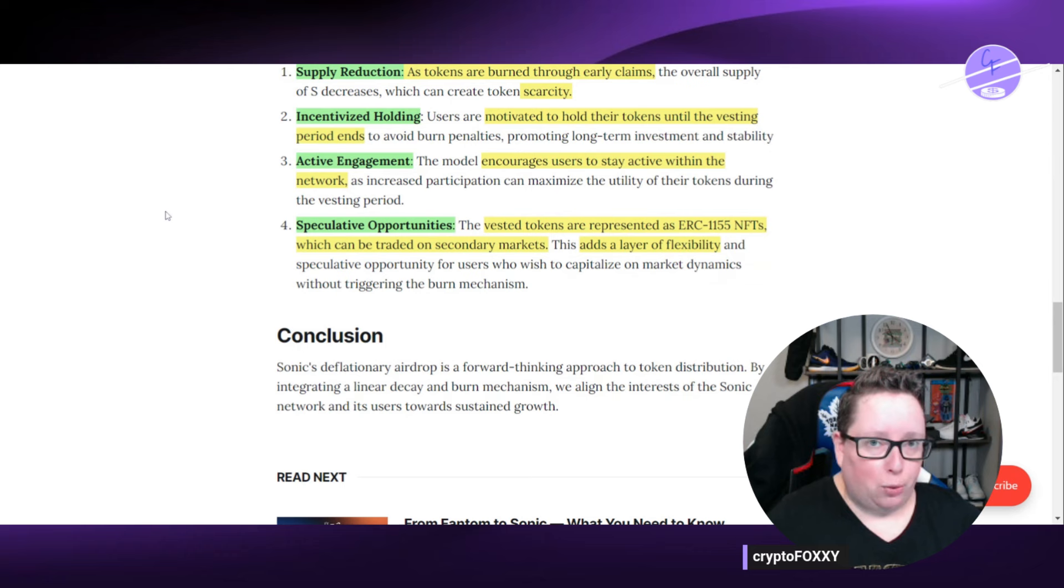There's also some speculative opportunities, things that they can kind of expand on in the future. Vested tokens are represented as ERC-1155 NFTs, which can be traded on secondary markets. So this adds a layer of flexibility and potential opportunities down the road for expanding these utilities.